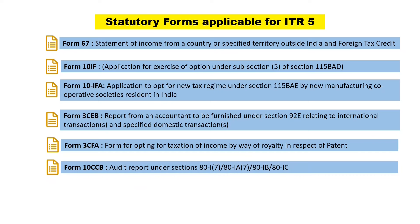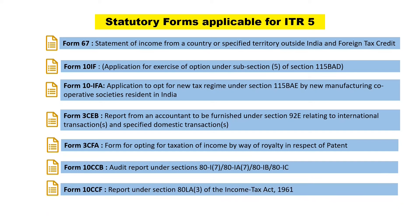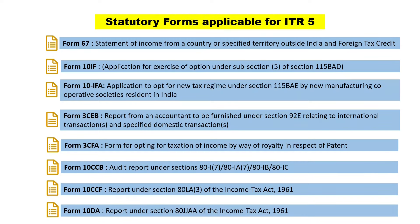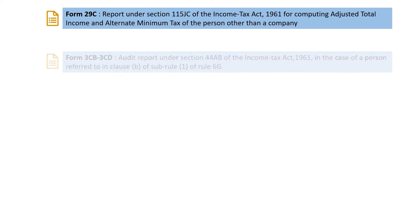Form 10CCB is an audit report under section 80IA subsection 7, 80IAA subsection 7, 80IAB, or 80IAC. Form 10CCF is a report under section 80ILA subsection 3 of the Income Tax Act. Form 10DA is a report under section 80JJAA of the Income Tax Act. Form 29C is a report under section 115JC of the Income Tax Act for computing adjusted total income and alternate minimum tax of a person other than a company.